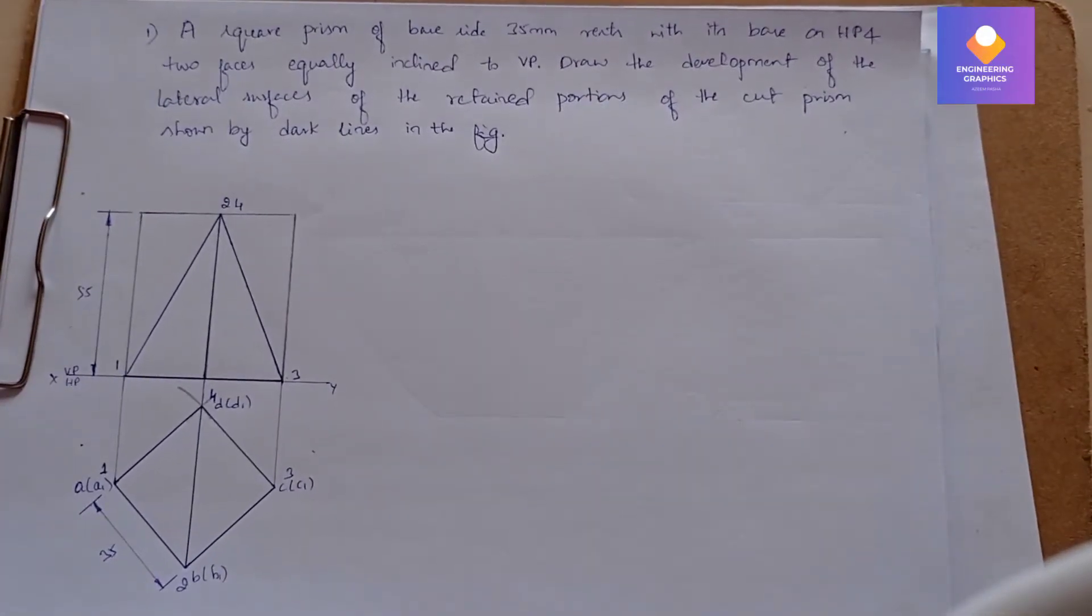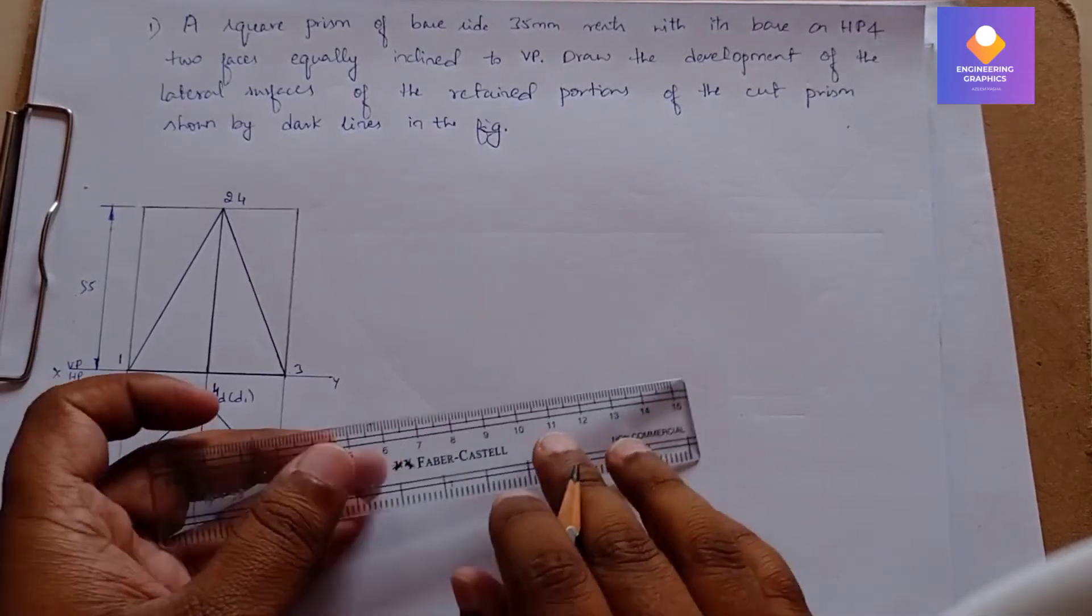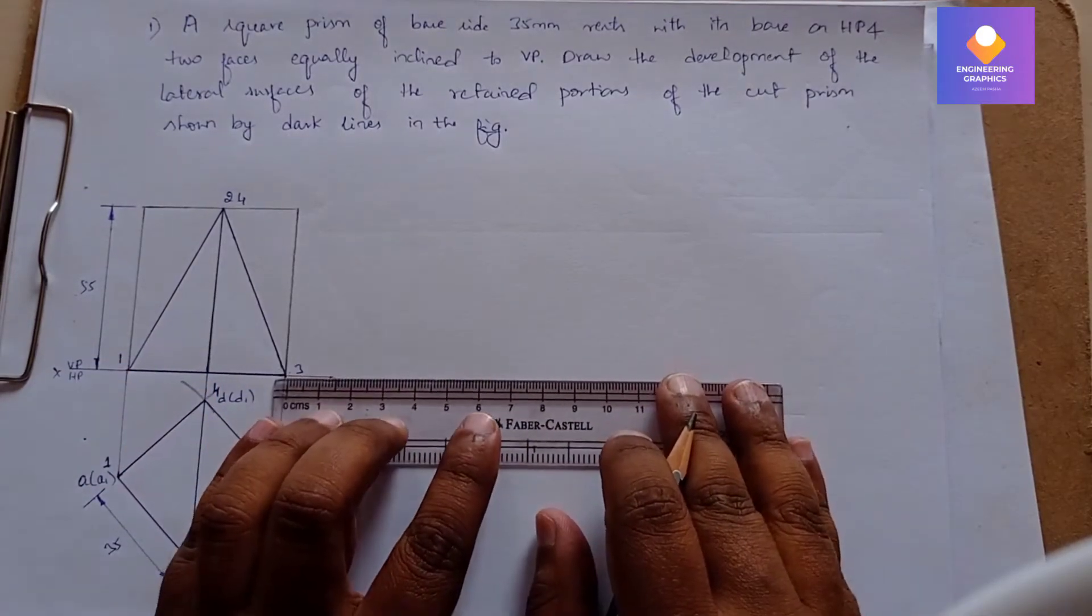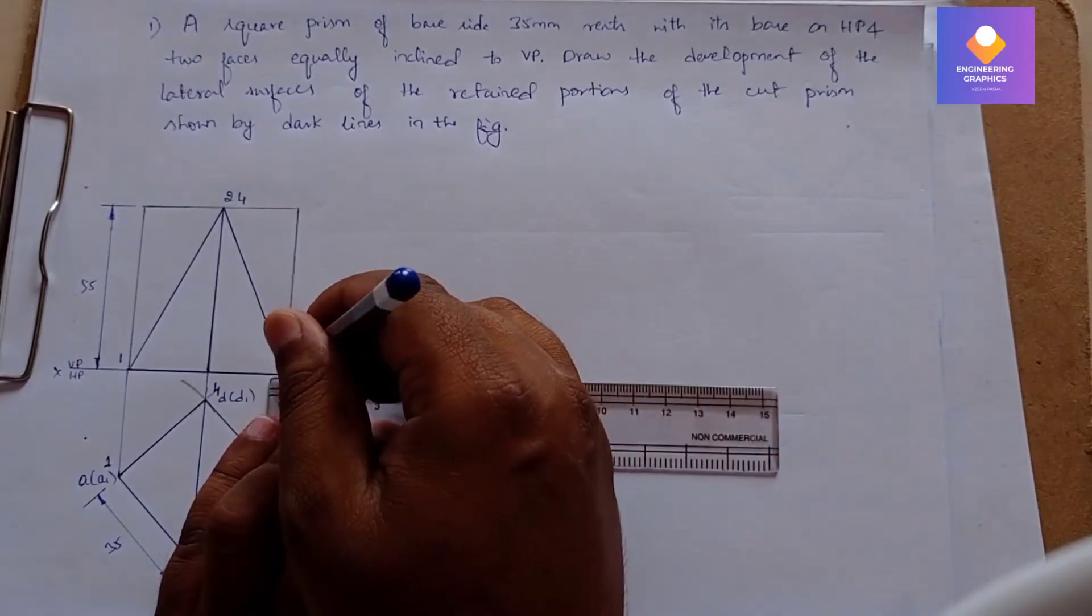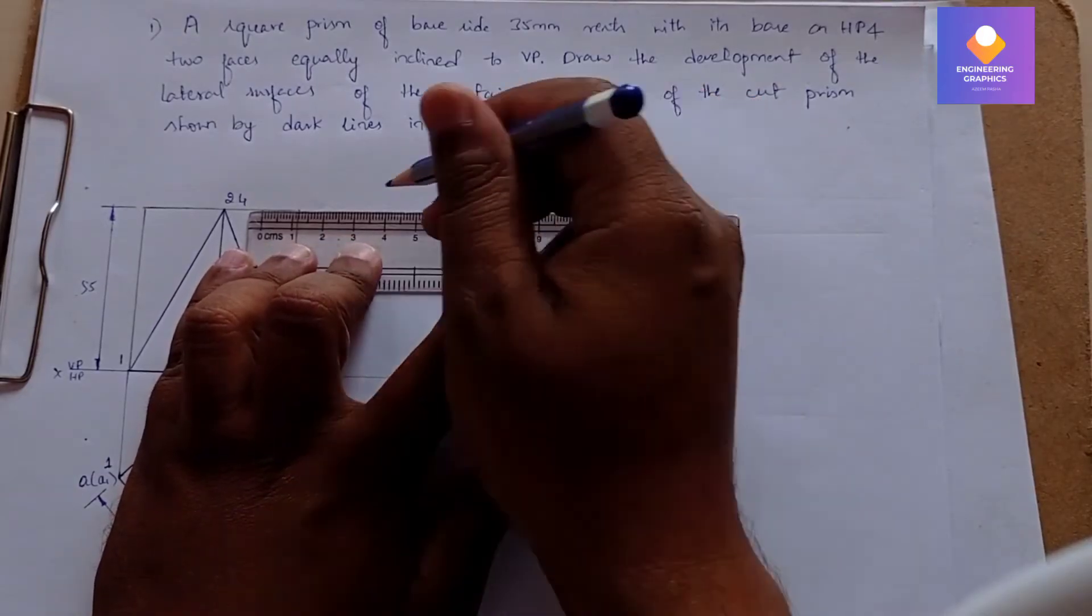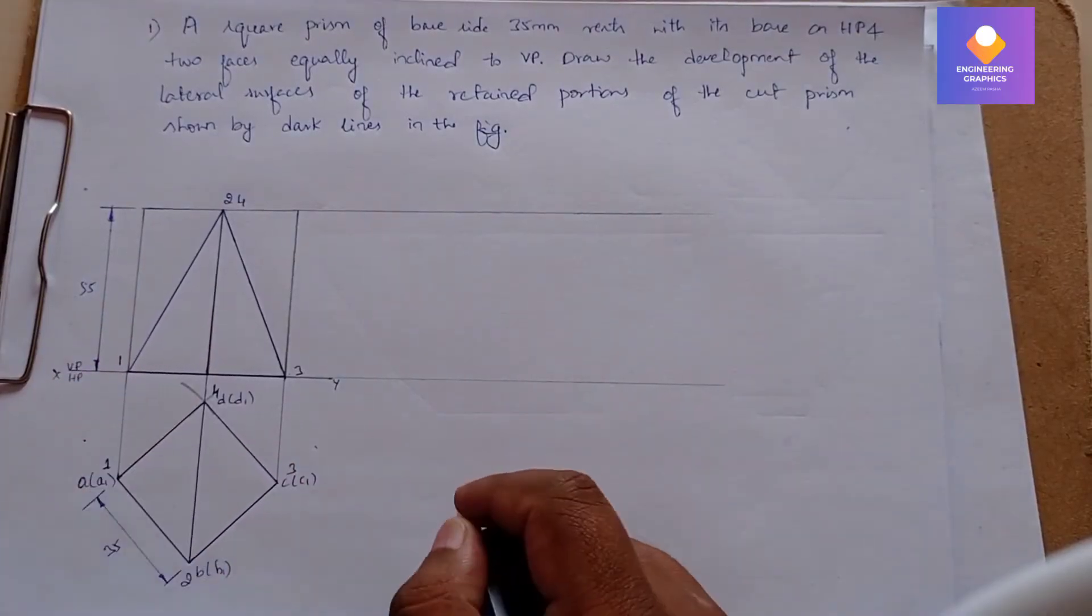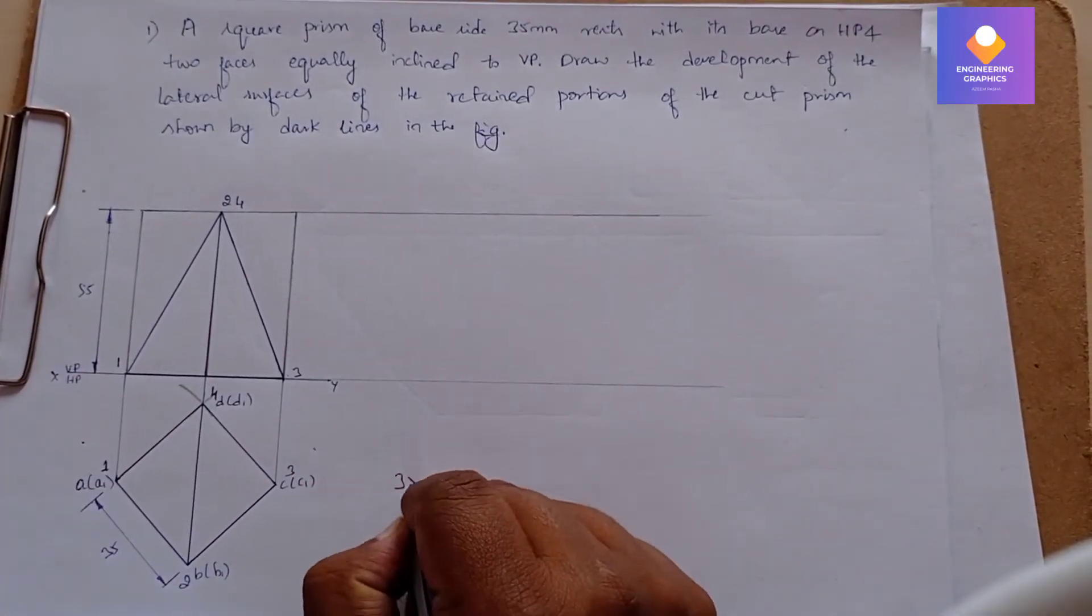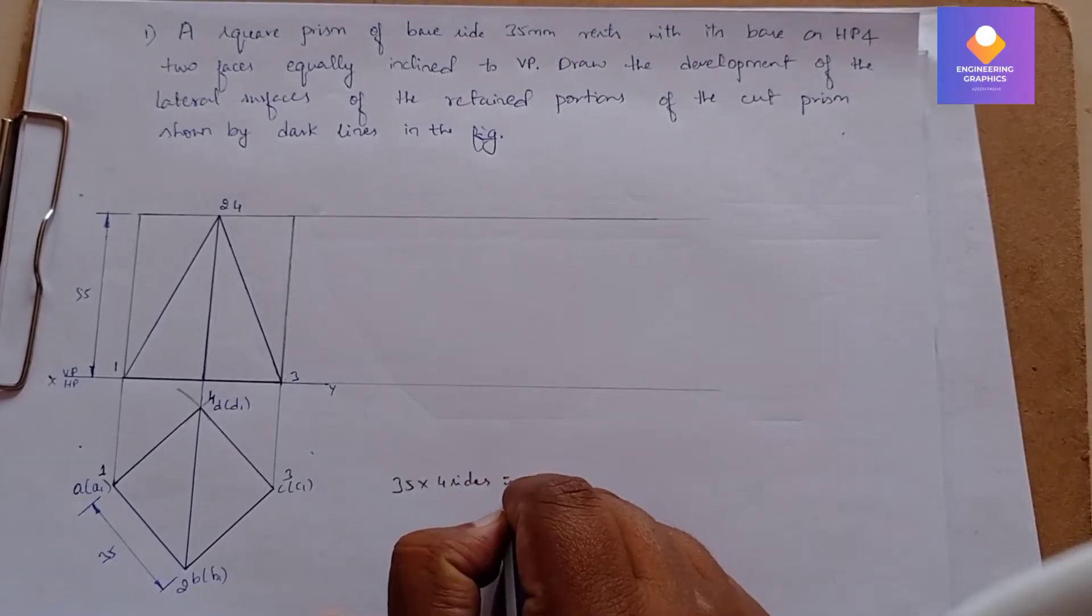A square prism of base side 35mm is given, with the base on HP and faces equally inclined to VP. With respect to the diagram given here, we need to draw the development of the lateral surface. It has been cut with respect to the diagram. You can see we have a base edge of 35mm.